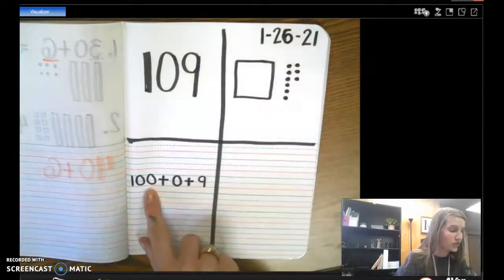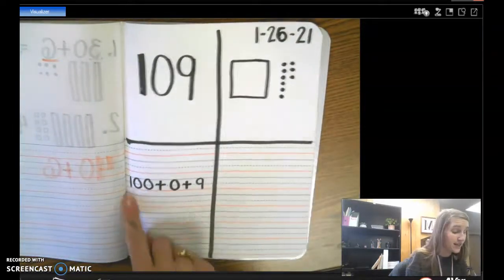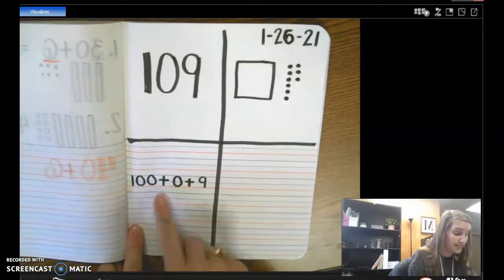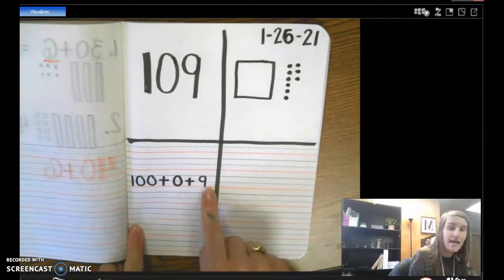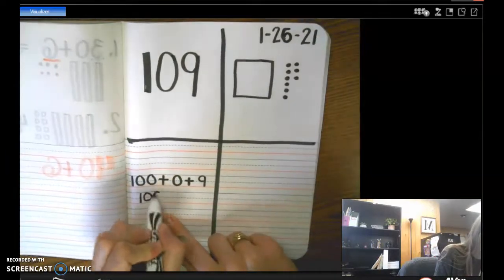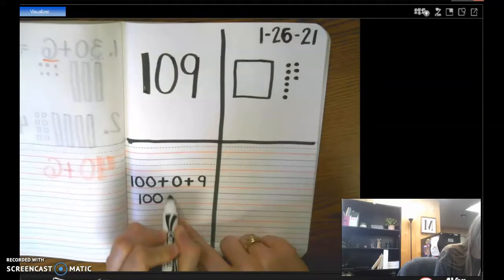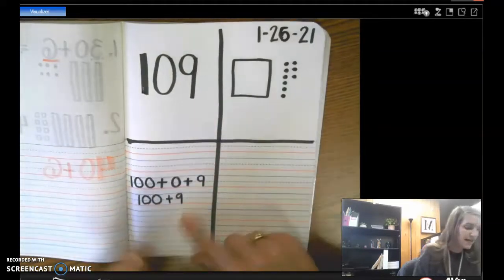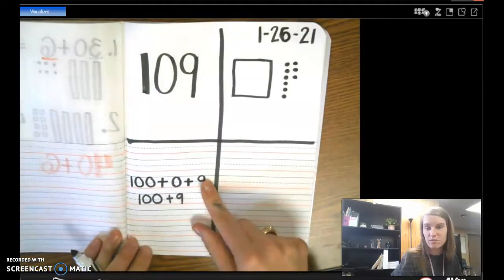So that's 109. Sometimes you might see it as 100 plus 0 plus 9. And some people, if they write it, they'll actually leave out that 0. So they'll just write 100 plus 9. Either way, those are expanded forms of 109.